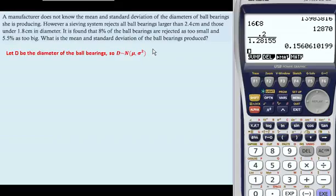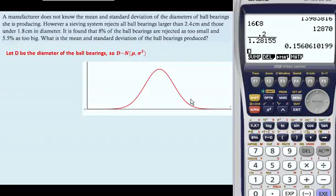Now let's write down what we know. Thinking about our graph, we know that the probability that D is bigger than 2.4 is 0.055. 5.5% is 0.055. That means we know that this area up here is 0.055, where we're dealing with 2.4 here. We also know that the probability that D is less than 1.8, this bit here, is 8%, which is 0.08, so we know that the area below that bit is 0.08.